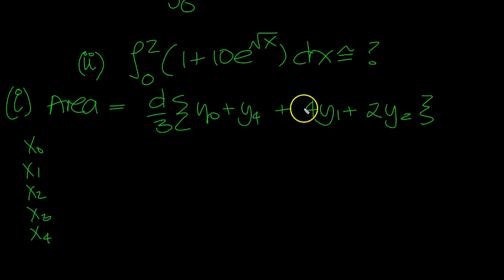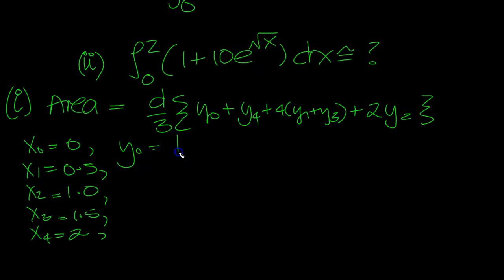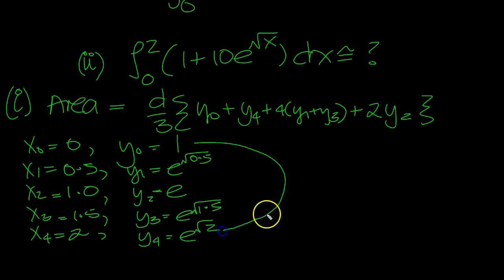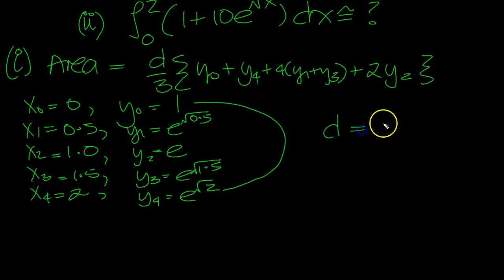4y1 plus 4y3 plus 2y2. Starting with 0 and 2. Now we've got y0, e root 0 is 1. E root 0.5. E root 1 is 1. So it's that one plus that one first of all. D is equal to 0.5.